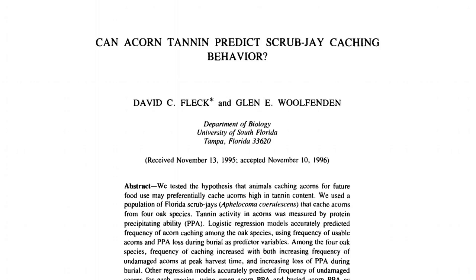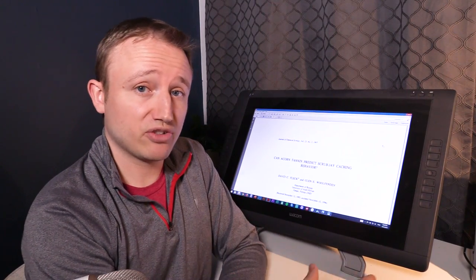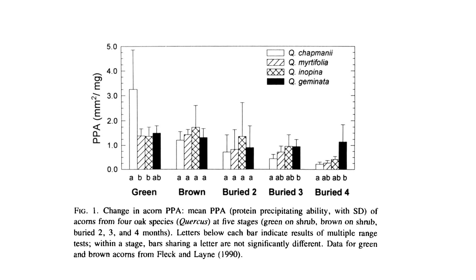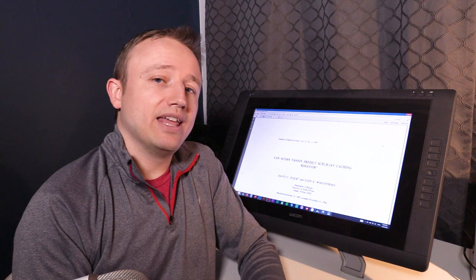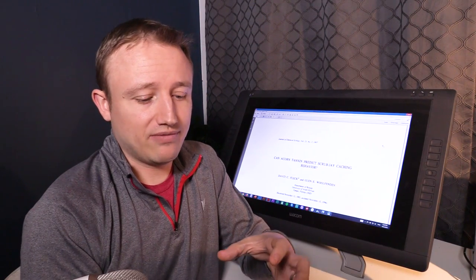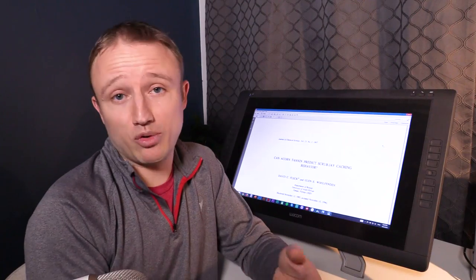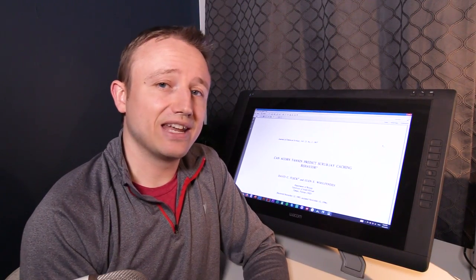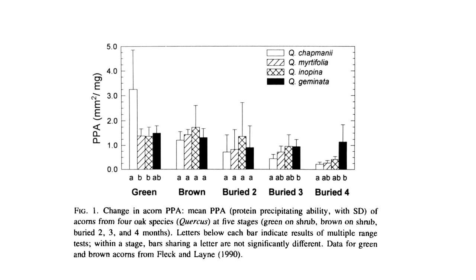Obviously animals want to avoid tannins, and trees have evolved to put lots of tannins in their seeds so that squirrels and birds won't want to eat them immediately — instead they'll bury them, cache them for later. There is a paper called "Can Acorn Tannin Predict Scrub Jay Caching Behavior?" In the study they collected acorns from different species of acorn-producing trees and measured their tannin levels. They found that seeds with high tannin levels were most likely to be cached by scrub jays or squirrels. We think the animals cache high-tannin seeds because low-tannin seeds are good to eat right now, while high-tannin ones get saved for when there's no better food available.